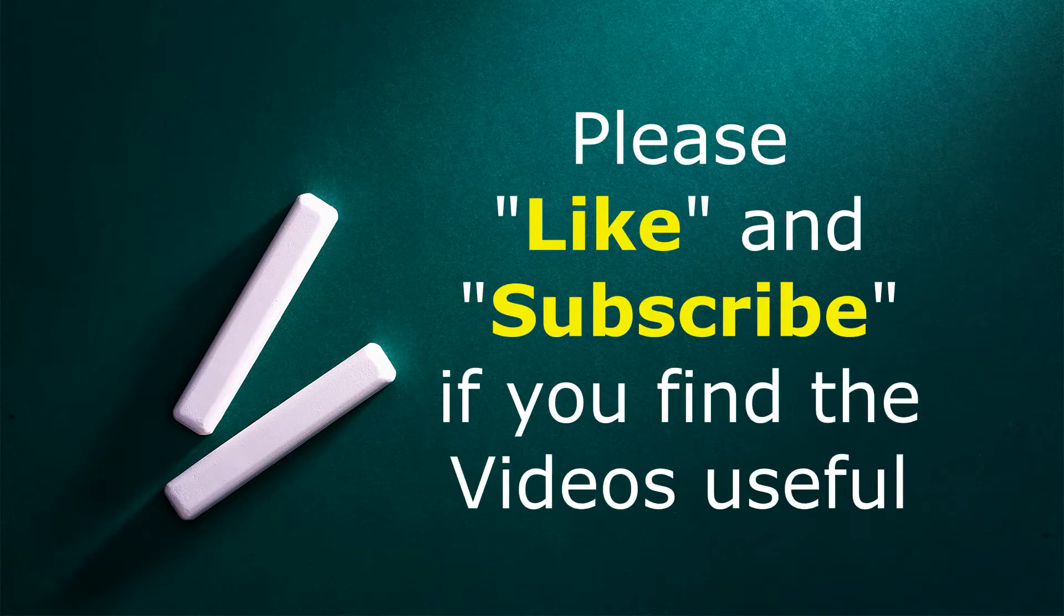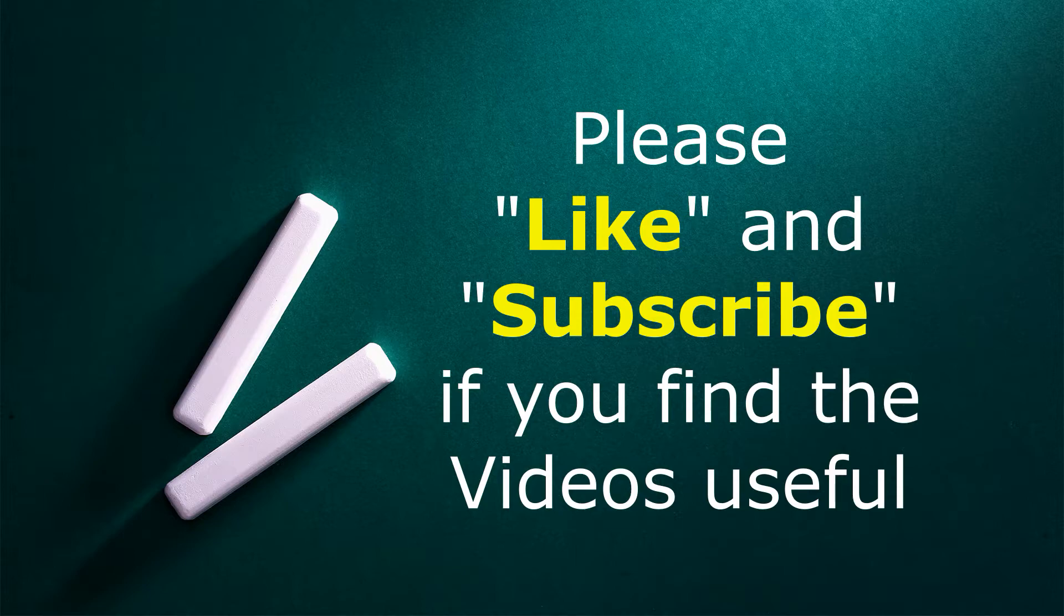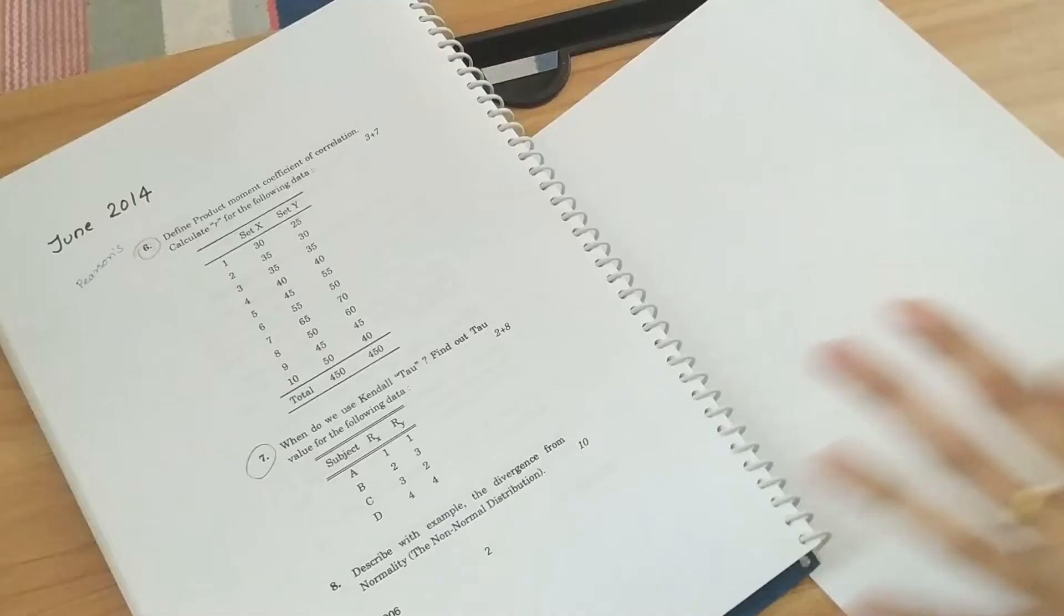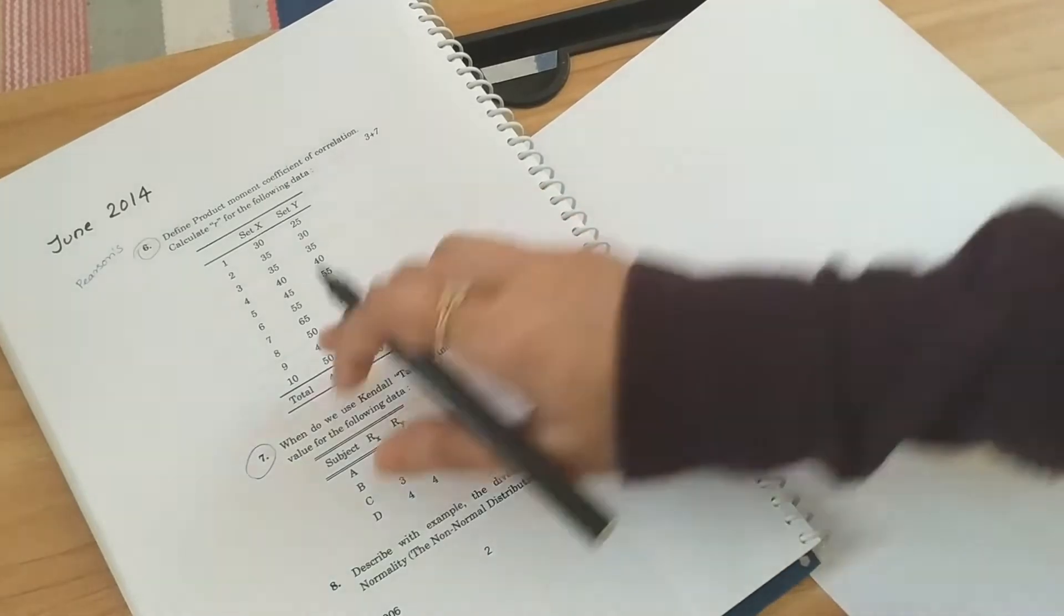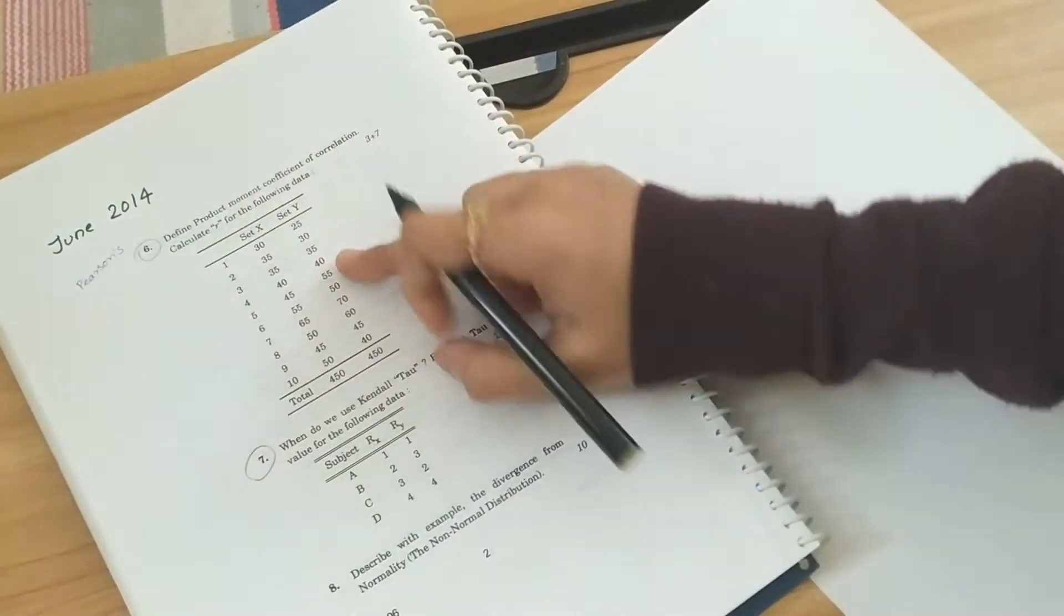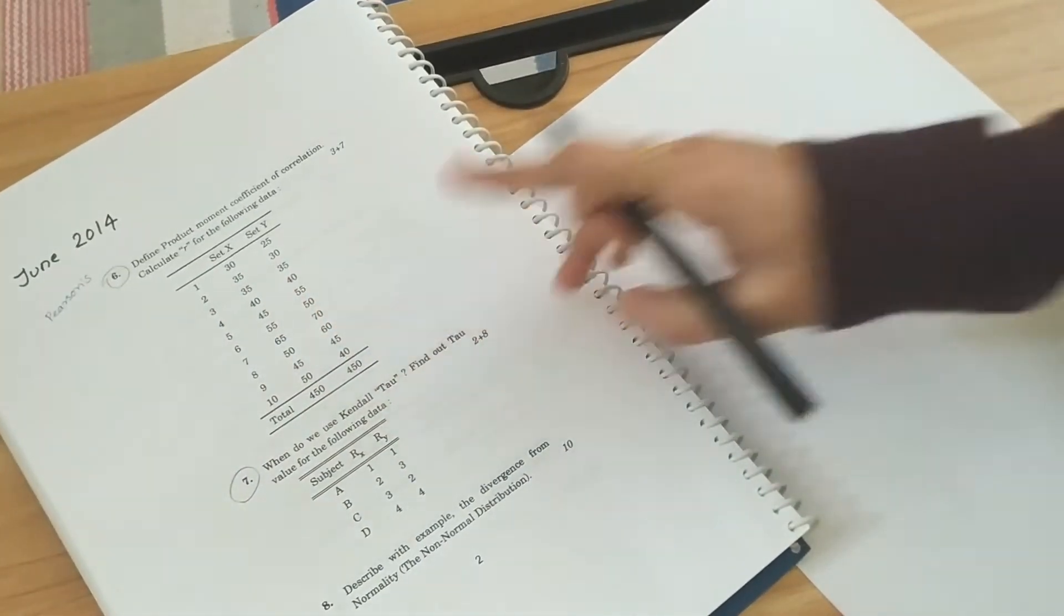Please like the video and subscribe to the channel if you find the videos useful. So let's see Pearson's coefficient. This is the problem from 2014. You can see the set of elements.